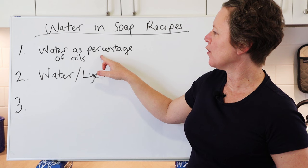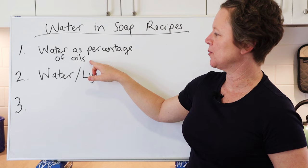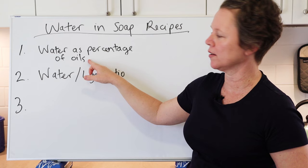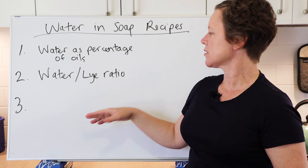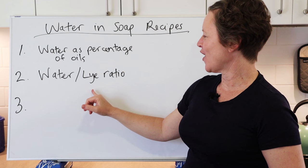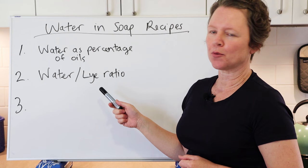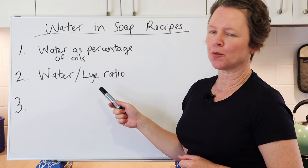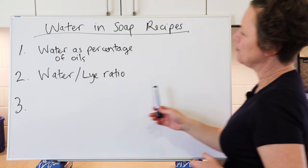This method is different to the first one. In the percentage-of-oils method, the water amount is in relationship to the oil amount. In the water-to-lye ratio method, the water is calculated in relationship to the amount of lye in the recipe. The amount of lye — sodium hydroxide for bar soaps, or potassium hydroxide for liquid soaps — has nothing to do with telling the calculator how much water you want. The actual lye amount is calculated by the soap calculator based only on the types and amounts of oils you're using.